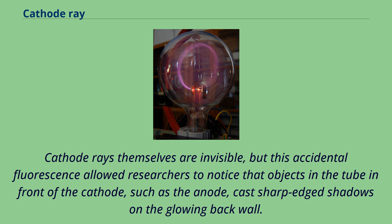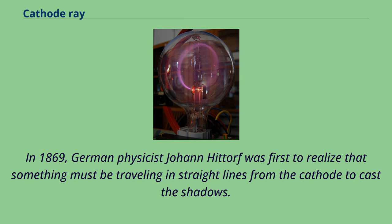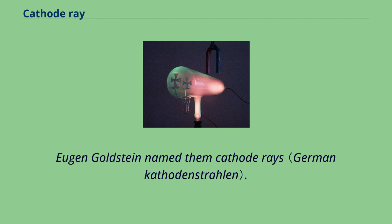Cathode rays themselves are invisible, but this accidental fluorescence allowed researchers to notice that objects in the tube in front of the cathode, such as the anode, cast sharp-edged shadows on the glowing back wall. In 1869, German physicist Johann Hitterf was first to realize that something must be traveling in straight lines from the cathode to cast the shadows. Eugene Goldstein named them cathode rays.